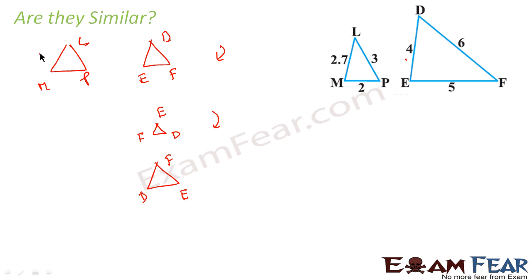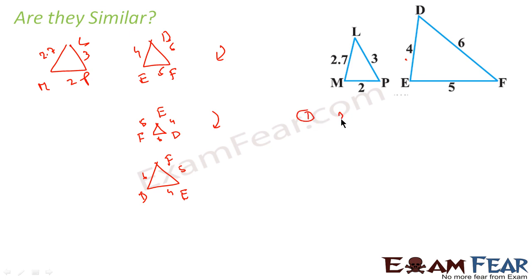Now if you see, this is 2.7, this is 3, this is 2, and 6.5. Now if I flip this, 3D becomes 4, this becomes 6. Now this becomes 4 and this becomes 6. In any of these cases, if you find the sides are proportional, you can prove that they are similar. For example, in case 1, if you see 2.7 by 4.